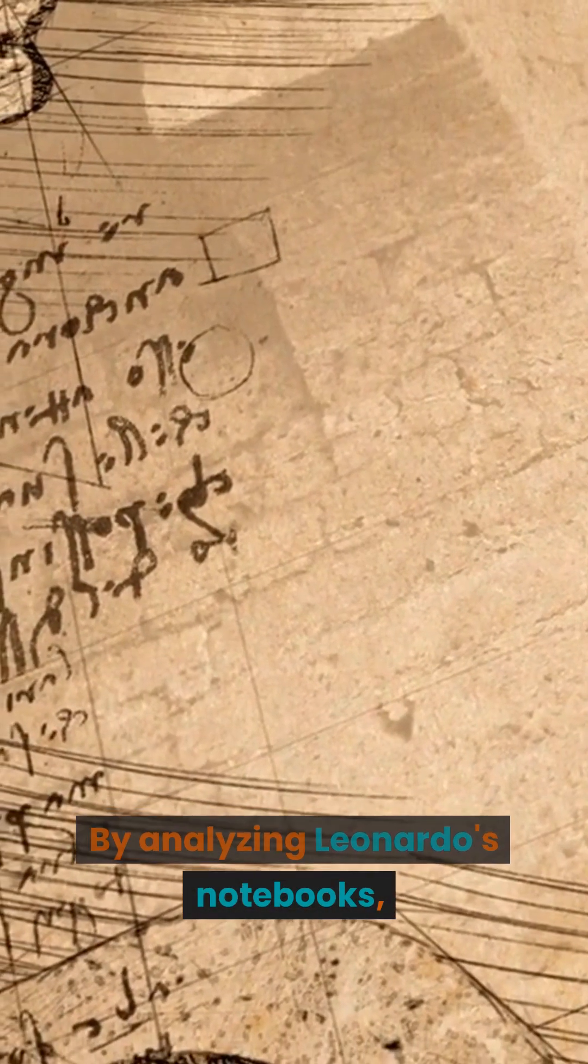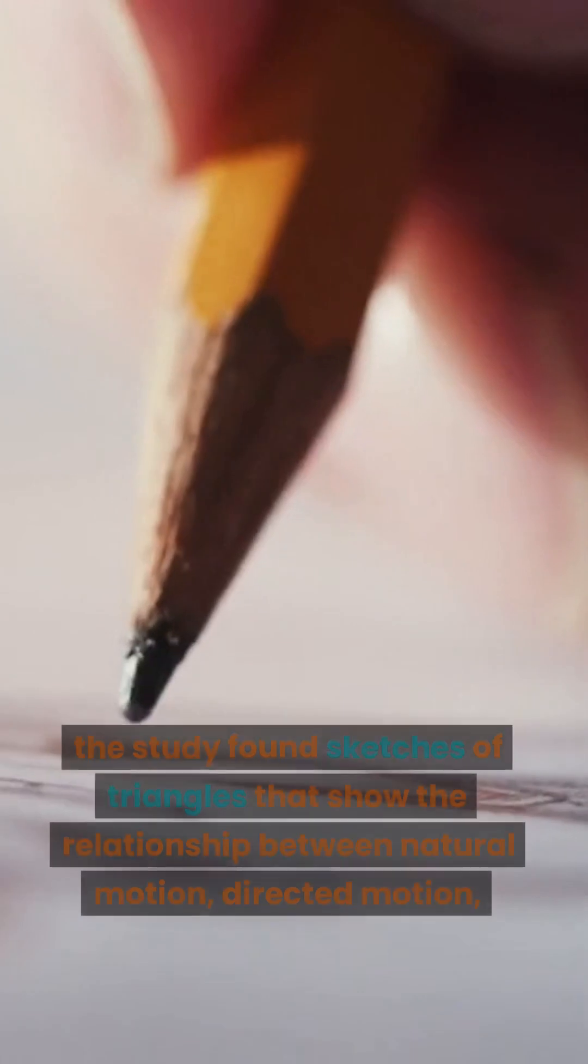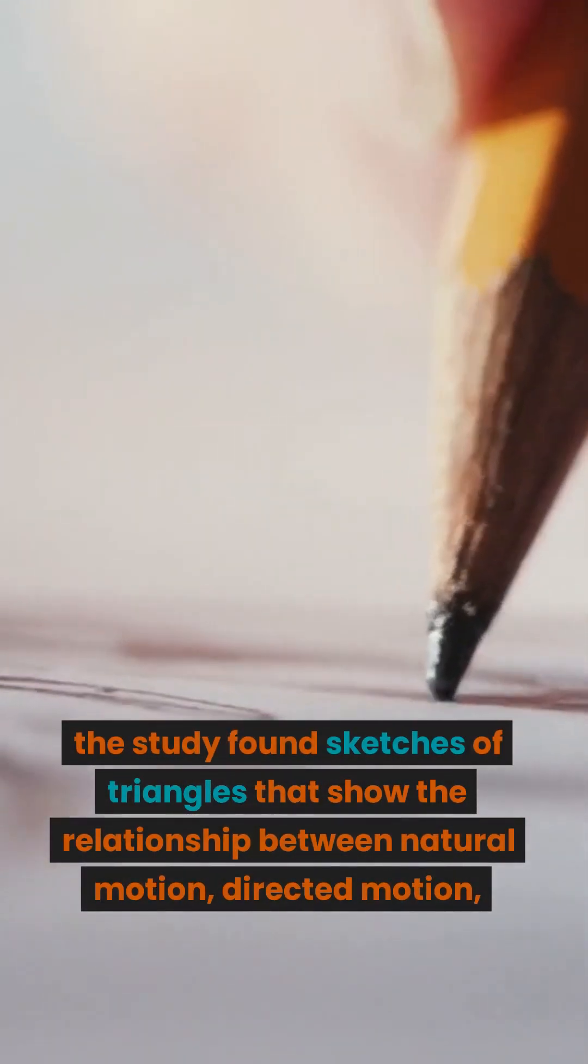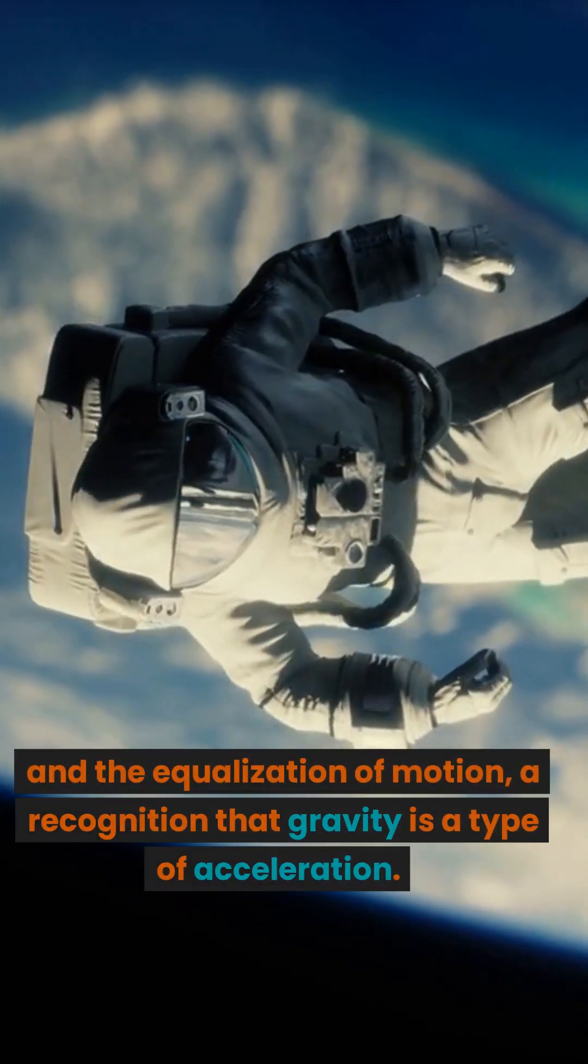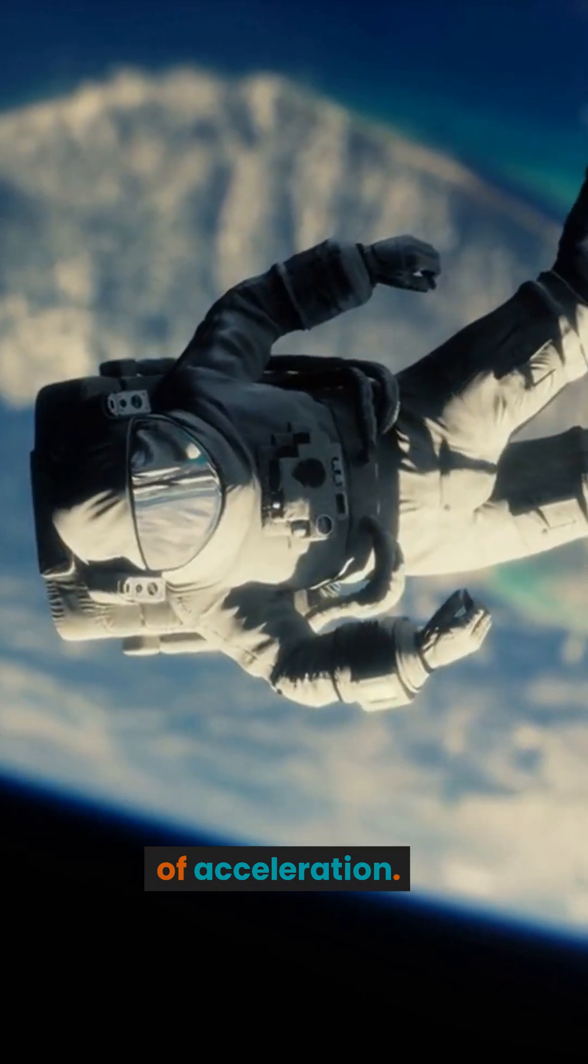By analyzing Leonardo's notebooks, the study found sketches of triangles that show the relationship between natural motion, directed motion, and the equalization of motion, a recognition that gravity is a type of acceleration.